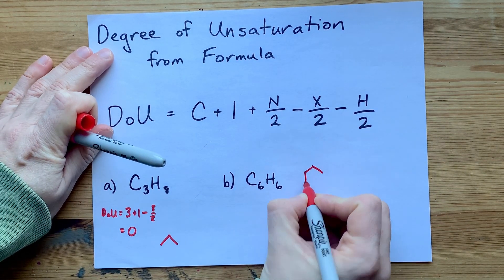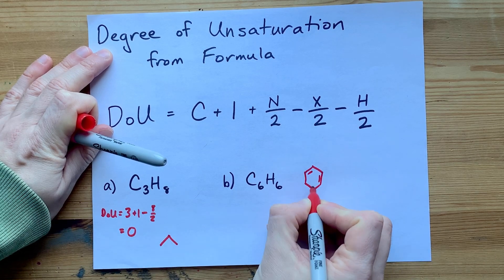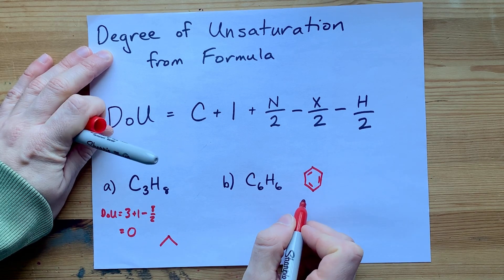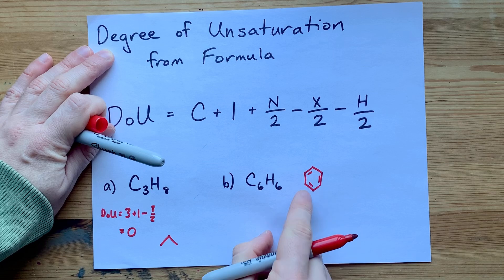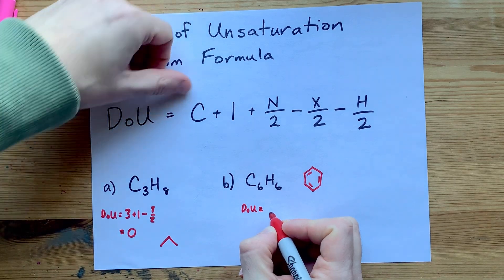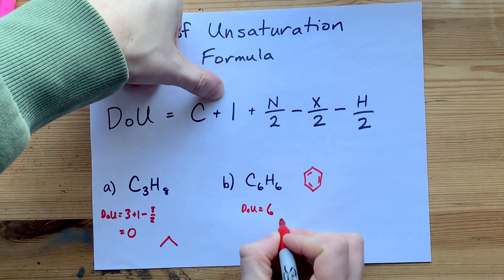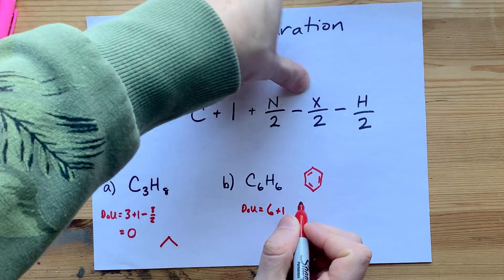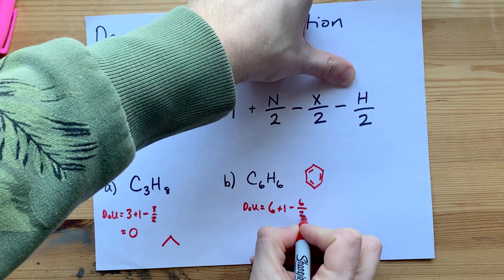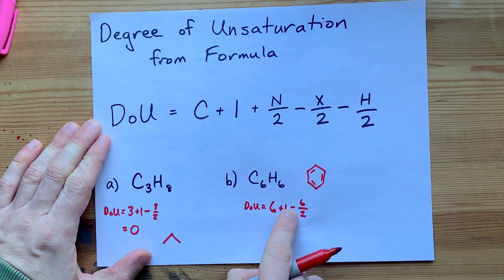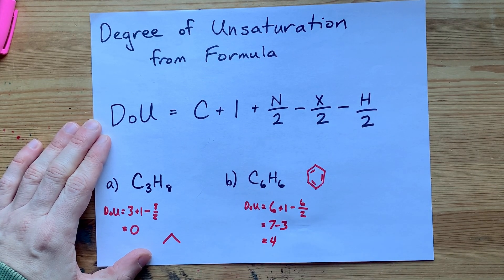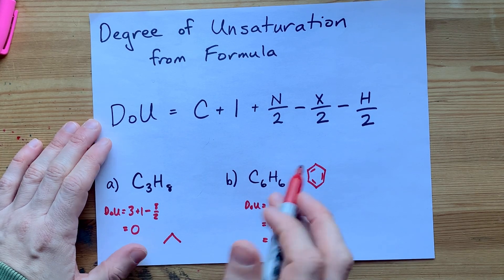Benzene is another story. We sometimes consider benzene to have three double bonds and a ring, so I'd expect the degree of unsaturation to be 4 — that's 1, 2, 3 double bonds and a ring. Let's see if the formula bears that out: number of carbons plus 1, no nitrogens, no halogens, minus number of hydrogens over 2. That's 6 + 1 = 7, minus 6/2 = 3, giving 4 unsaturations — 3 double bonds and one for the ring.